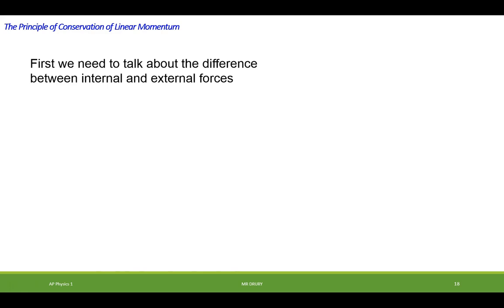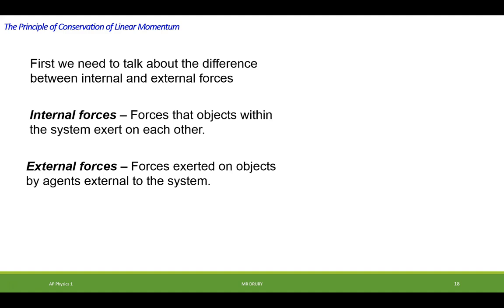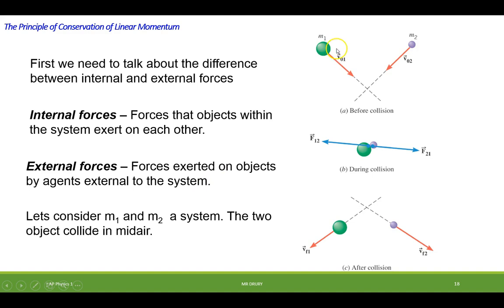First we need to talk about the difference between what's called internal and external forces. Internal forces are forces that objects within a system exert on each other, while external forces are forces exerted by objects outside of the system. And we're going to consider two objects that collide in midair to be the system, M1 and M2.